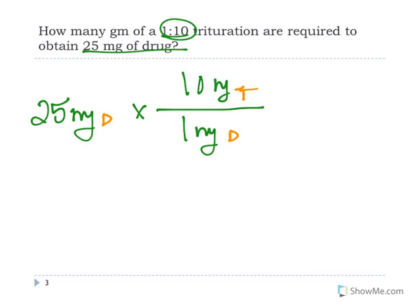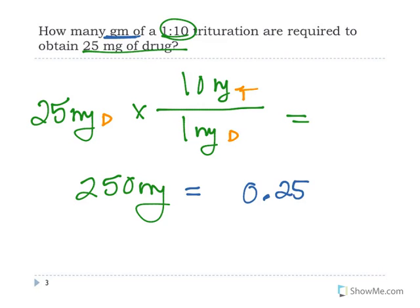So when you solve for this, you simply solve for 250 milligrams, and that's how much trituration. Now one thing you have to realize is the problem does ask for you to answer in grams, so the real answer of this problem is 0.25 grams.